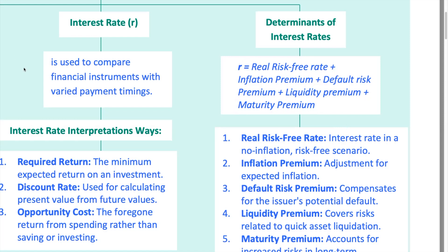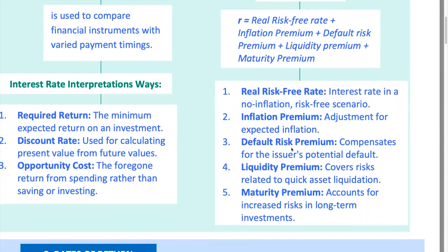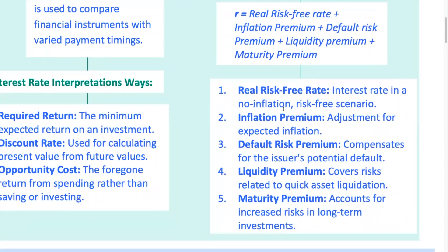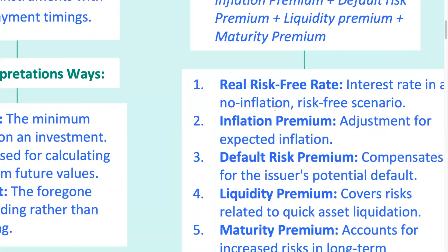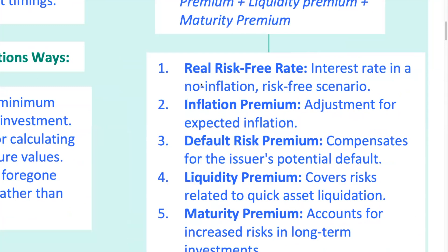Now let's dive deeper into each component. The real risk-free interest rate — think of the safest investment out there, like a U.S. Treasury bill with no expected inflation. The return you get is the real risk-free rate; it represents pure compensation for waiting. Number two is the inflation premium. Prices usually go up over time, so if you're lending money, you'll want compensation for the loss of purchasing power. If inflation is expected to be 2%, you'll want at least 2% added to your interest rate to keep your purchasing power intact.